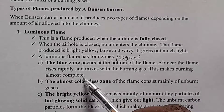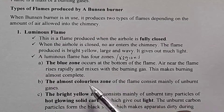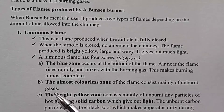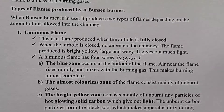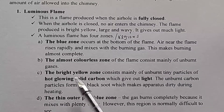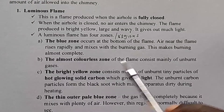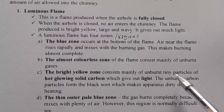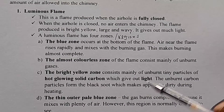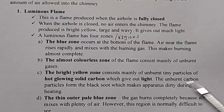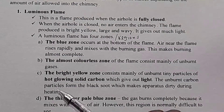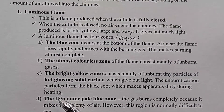This makes burning almost complete. The next part is the almost colorless zone, which consists mainly of unburnt gases, because there we have a limited supply of air. Then the third part is the bright yellow zone, which consists mainly of tiny particles of hot glowing solid carbon which give out light. The unburnt carbon particles form the black soot which makes apparatus dirty during heating.